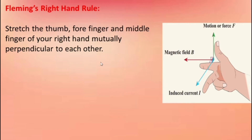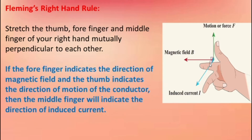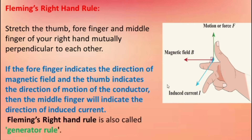Stretch the thumb, forefinger, and middle finger of your right hand mutually perpendicular to each other. The forefinger indicates the direction of the magnetic field, the thumb indicates the direction of motion of the conductor or force F, and the middle finger indicates the direction of induced current. This Fleming's right hand rule is also called the generator rule.